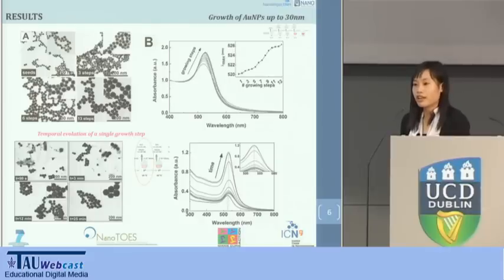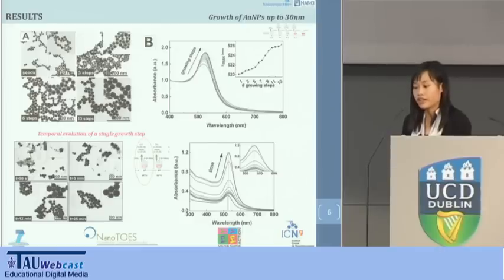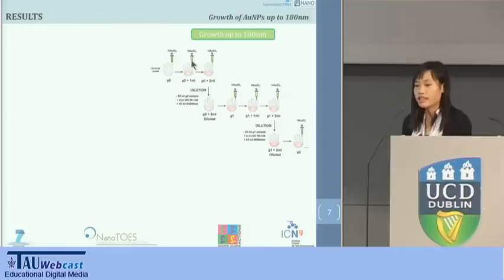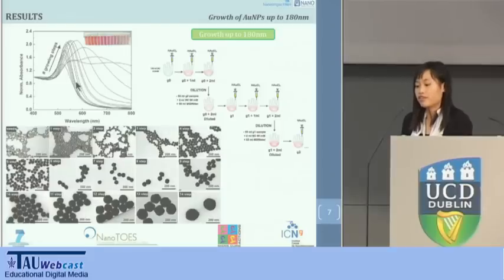In principle, there is no reason against further growth using this method. But we stopped at the 13th growth step because continuing would require consumption of a huge amount of gold precursor. To solve this problem, for growth up to 180 nm, before each growth step we dilute the seed solution. And in each generation, we inject the gold monomer twice to facilitate size focusing. The evidence for nanoparticle growth can be seen from the UV-Vis results, and once again this correlated well with the TEM images.